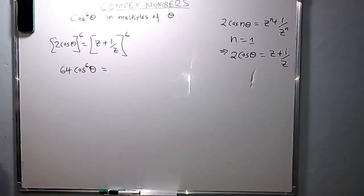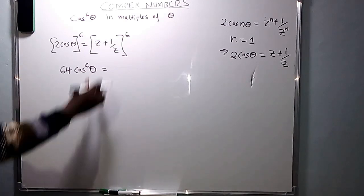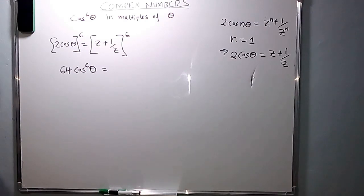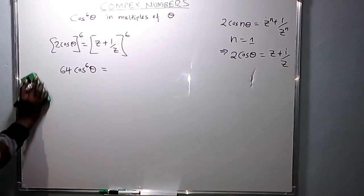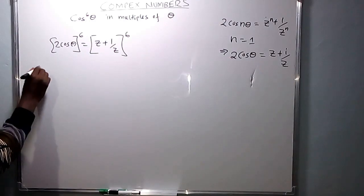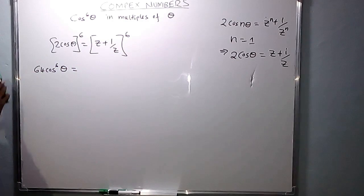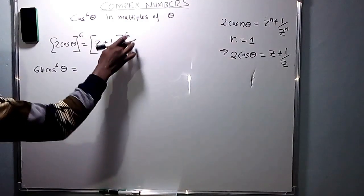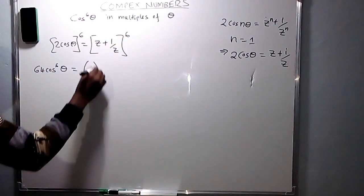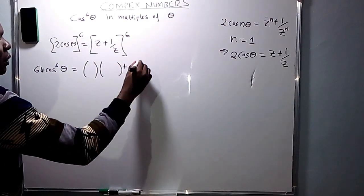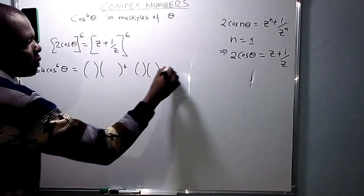On the right side we have a binomial problem, so we use binomial expansion. In the binomial expansion we have 7 terms: the first term plus the second term plus the third term plus the fourth term plus the fifth term plus the sixth term plus the seventh term.